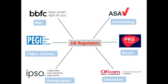One of the things that Ofcom are responsible for — one of the rules that they set out — is the idea of the watershed. The watershed is the time when TV programmes that are suitable for children can be broadcast. The watershed in the UK is 9pm, so it's after 9pm that more adult or mature television programmes and films are allowed to be broadcast. That's an important rule designed to protect children from witnessing content that is unsuitable for them.